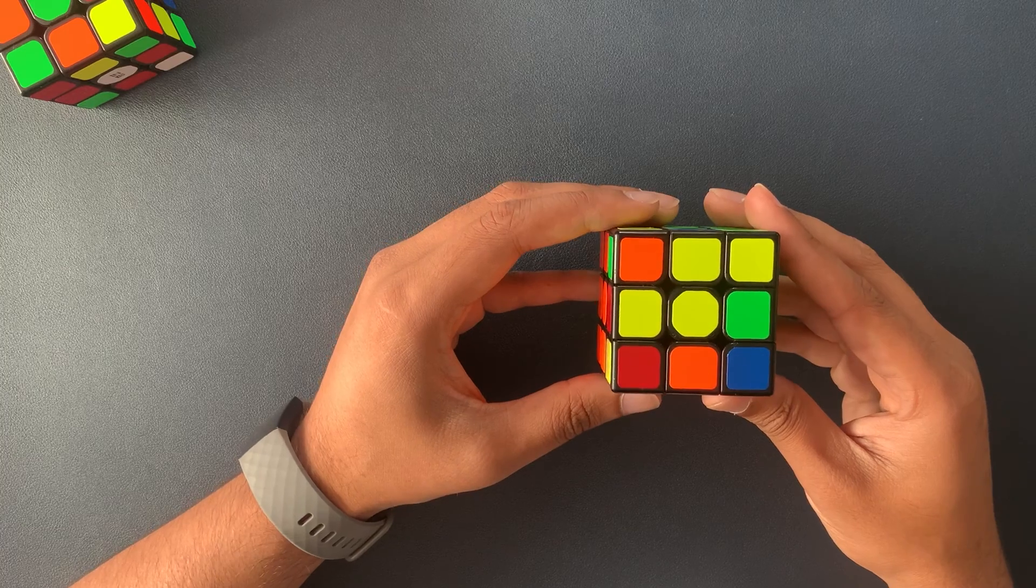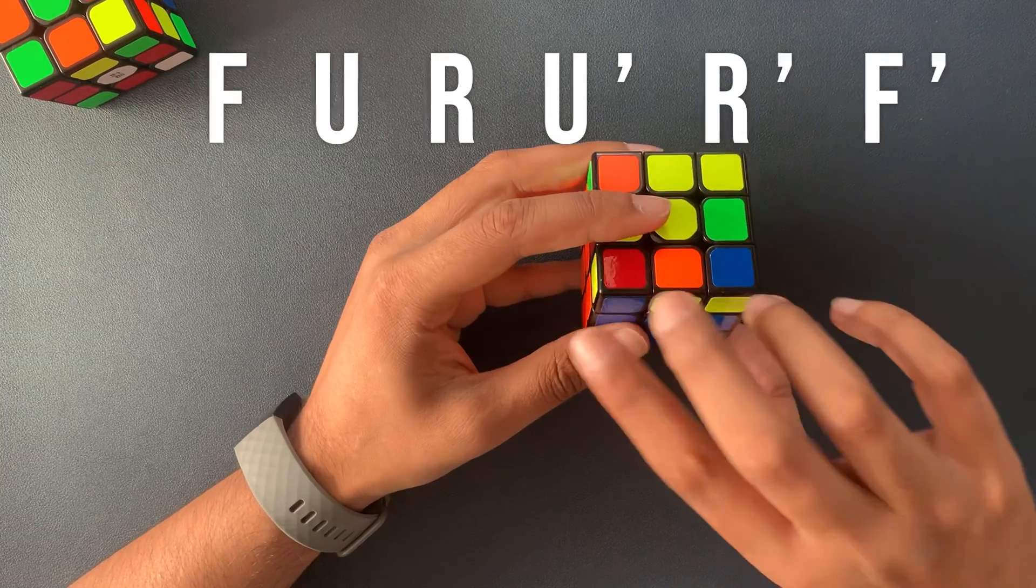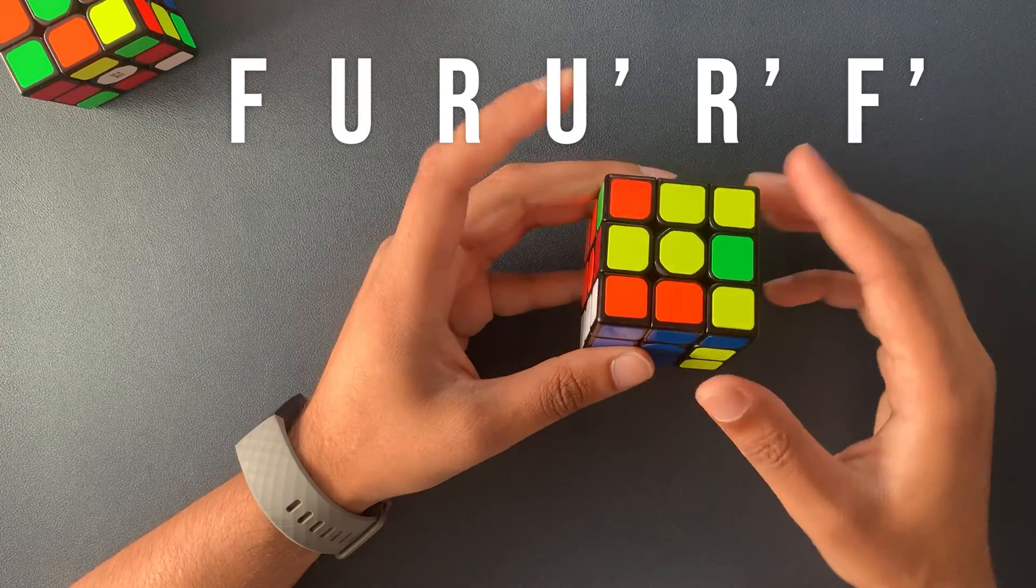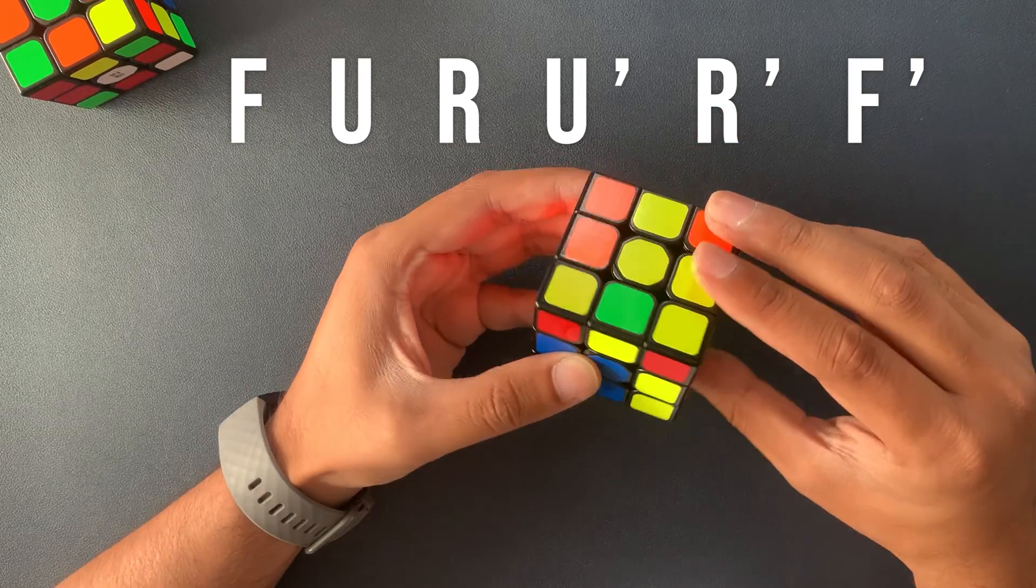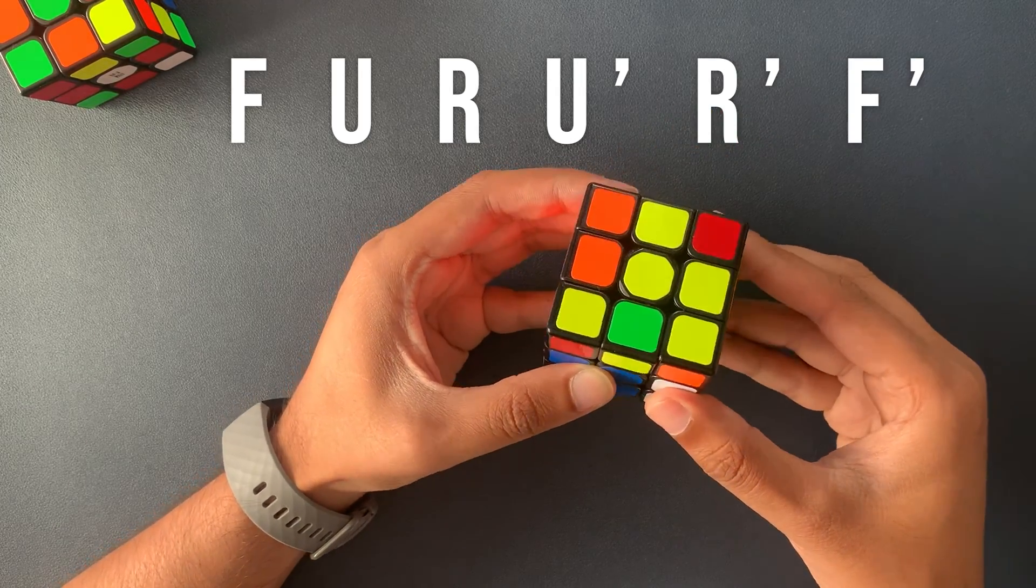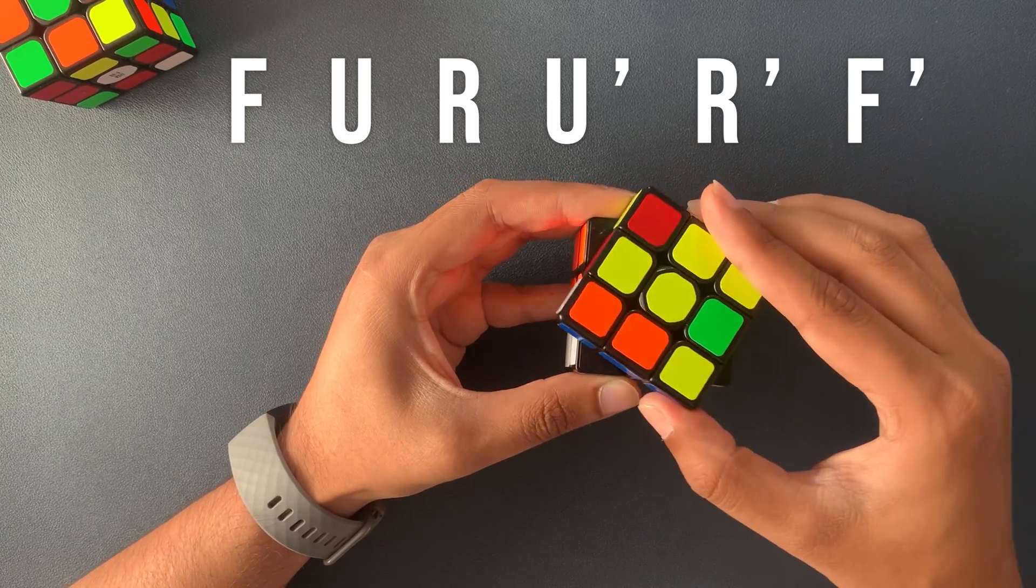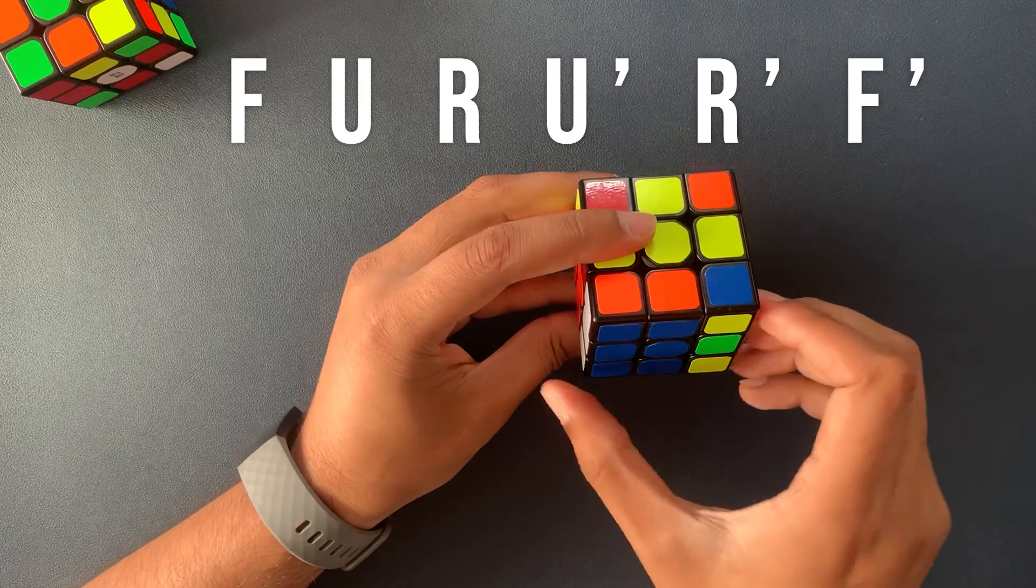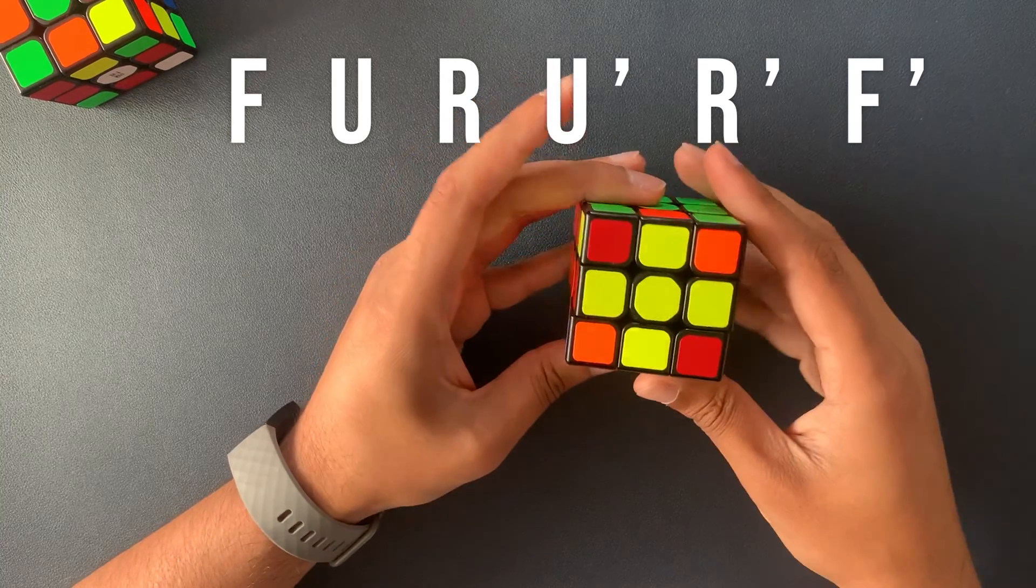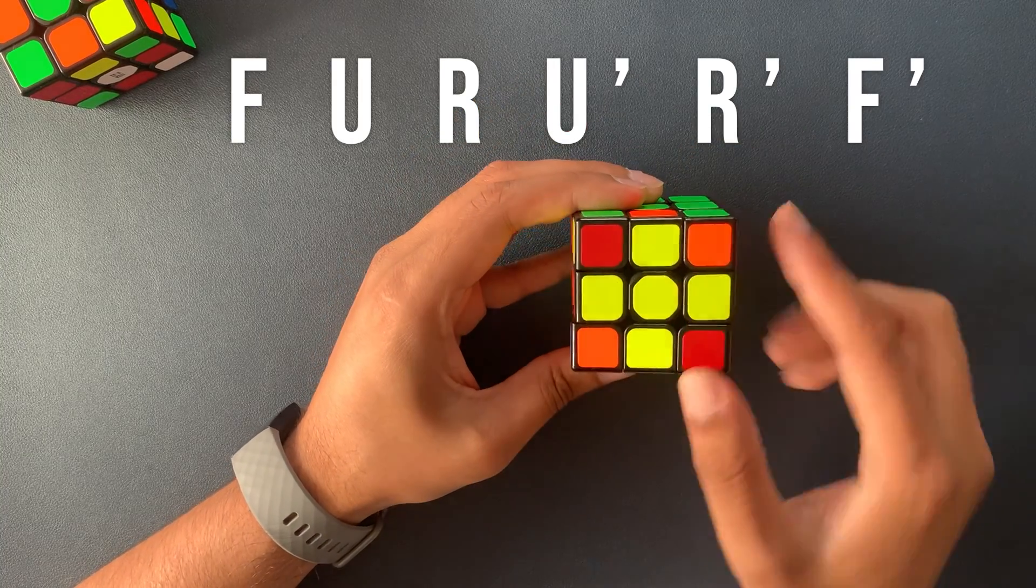The moves for step 5 is F U R U' R' F' and now I've got my yellow cross.